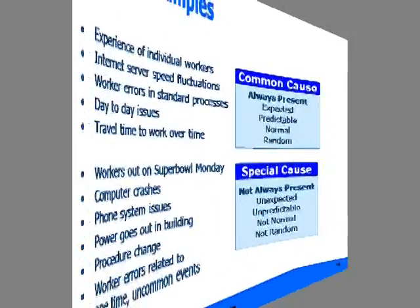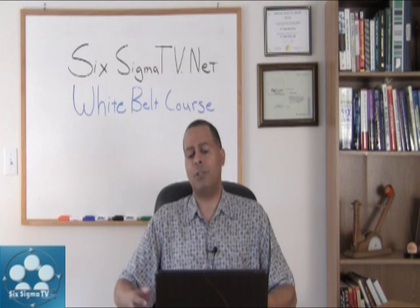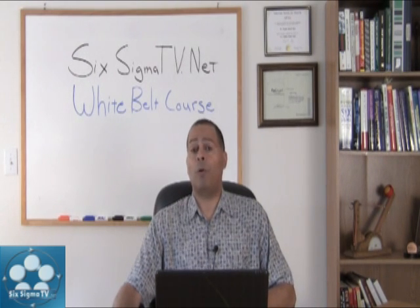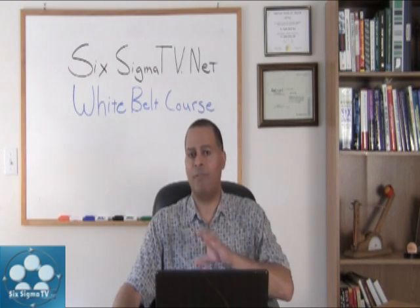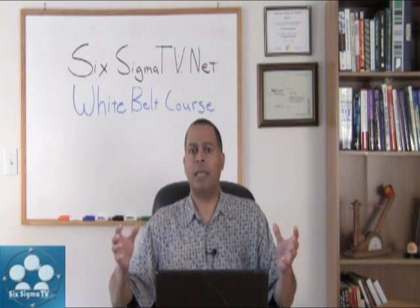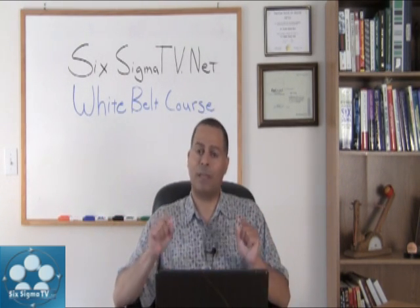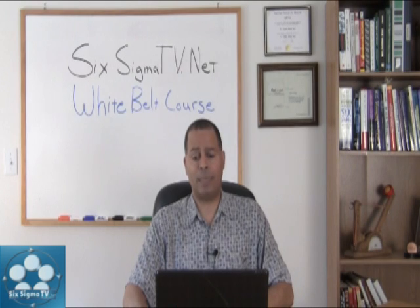Special cause variation are those things that are unexpected and unpredictable — they're not normal. Say you're driving to work and you get a fender bender. That's going to take you a lot longer because something special happened — something out of the ordinary. Those are what we want to identify and eliminate from our processes. We want to get rid of those anomalies first, then work on the common variation to squeeze and center your process to meet customer needs and expectations.